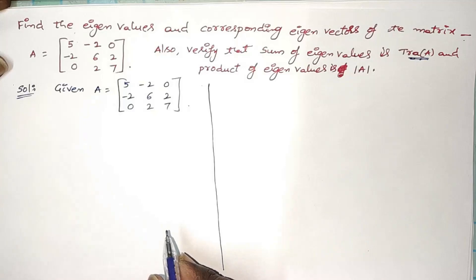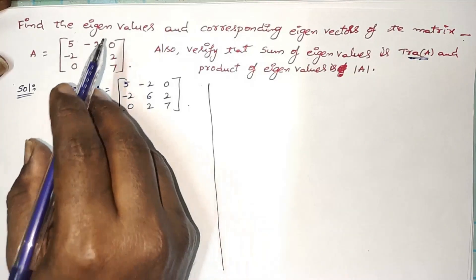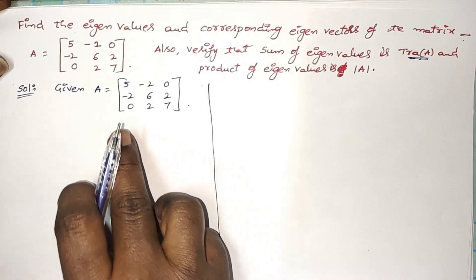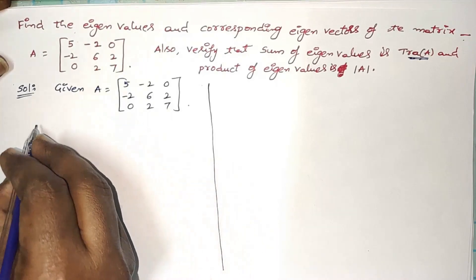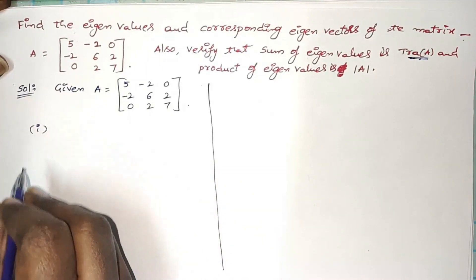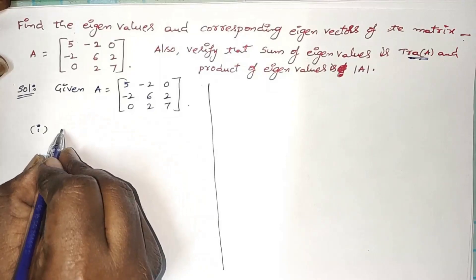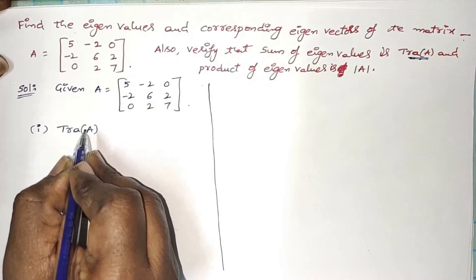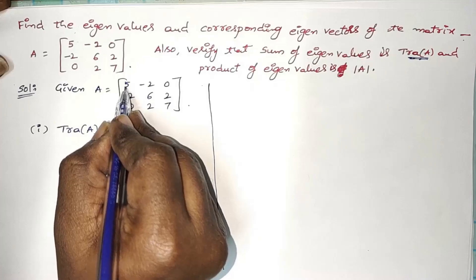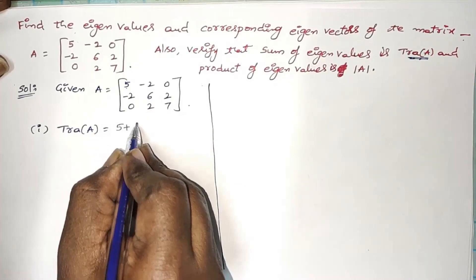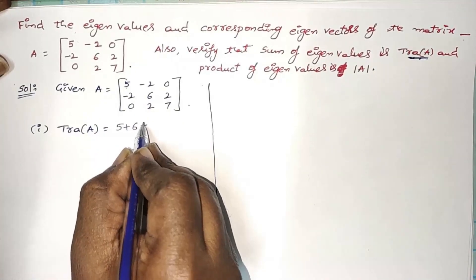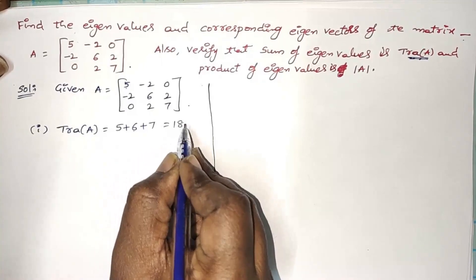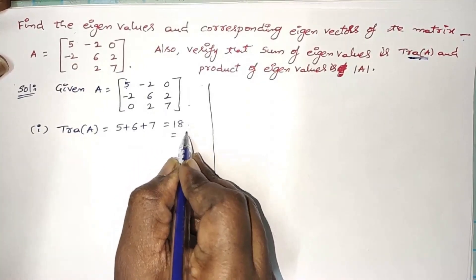First of all, to get eigenvalues, we have to find out the characteristic equation of A. For that purpose, I will find out three values. The very first one is the trace of A — the sum of diagonal elements: 5 plus 6 plus 7 equals 18. We call this S1.